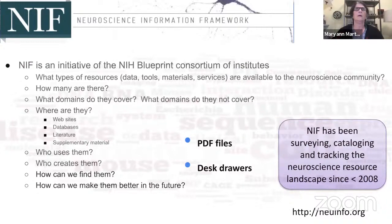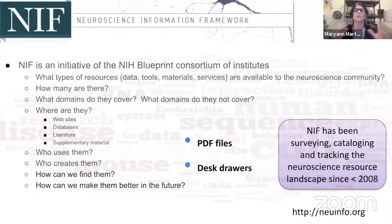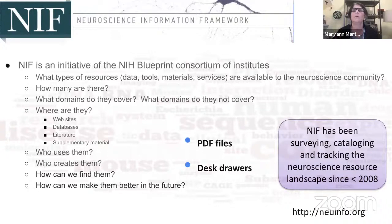A lot of my introduction to ontologies came through a project called the Neuroscience Information Framework, which has been going on since before 2008. It was an initiative of the NIH Blueprint Consortium — all the institutes involved in neuroscience — who had been funding databases, online tools, and materials. This predated NIH Reporter and a lot of things now available to find resources, so it was very difficult to know what resources were out there and available to the neuroscience community. NIF at its heart was a cataloging exercise — maintaining a very large catalog of these resources to find out what is being built and what domains they cover.